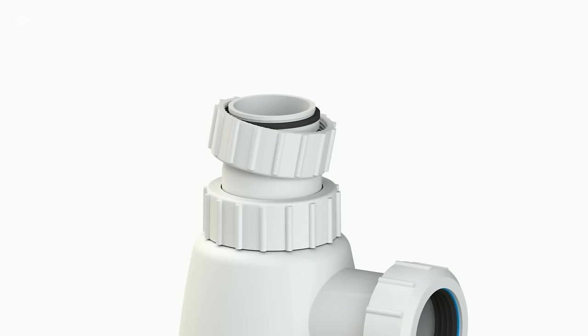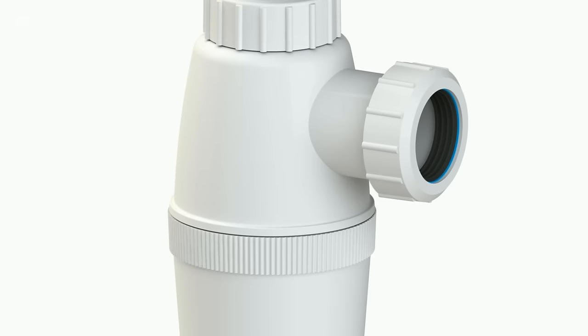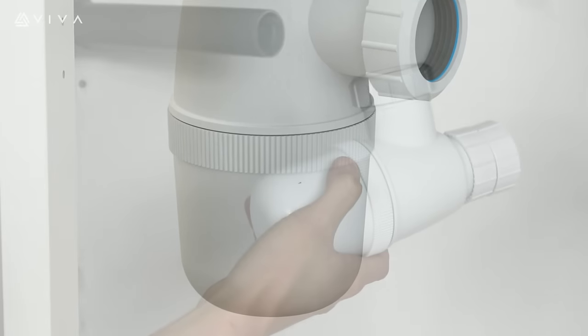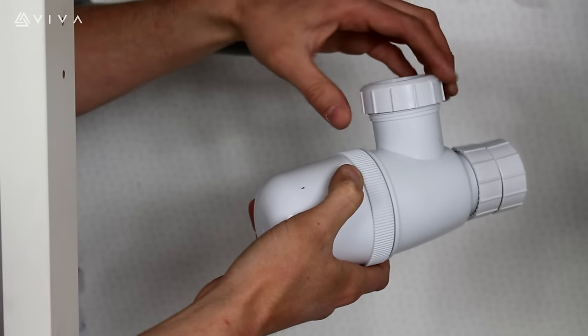This video demonstrates how to install an EasyFlow Telescopic Bottle Trap. Firstly, remove the outlet nut and place over the waste pipe.